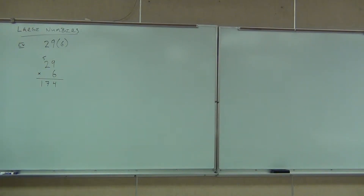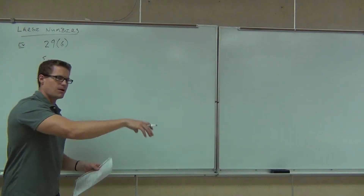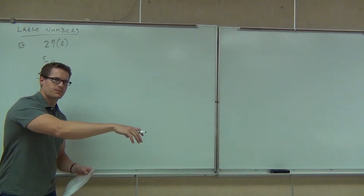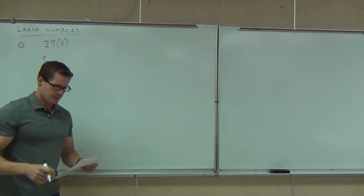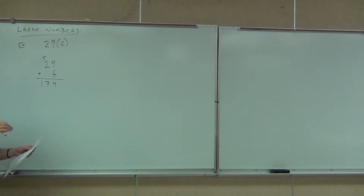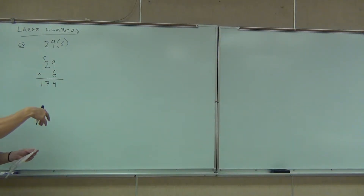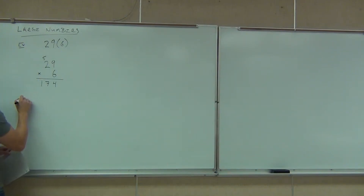So that's one way we can multiply large numbers — line them up vertically and multiply each digit on the bottom by each digit on the top. We do need to remember place value holders when necessary. Here they weren't necessary, but we might see them sometimes.